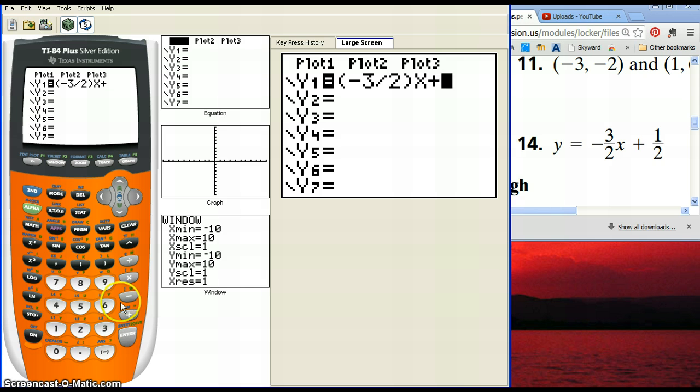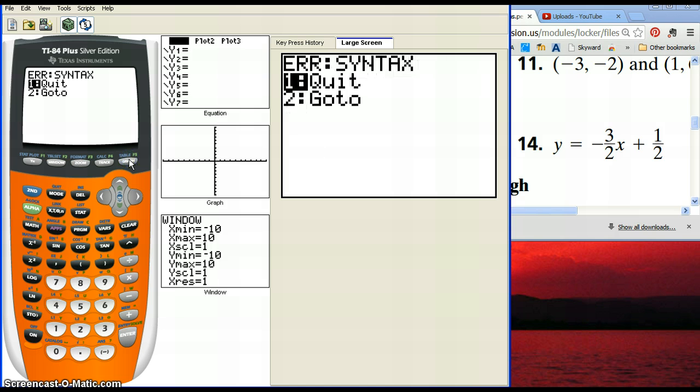And then, since we're adding a fraction, it would be parenthesis again, 1 divided by 2, and close the parenthesis. So, that is how you type in the equation. Then you just hit graph to graph the equation.